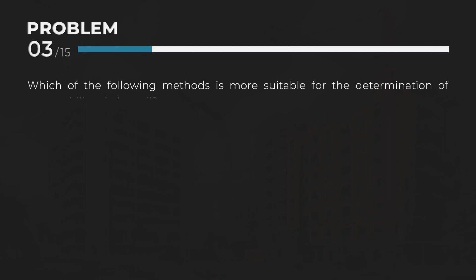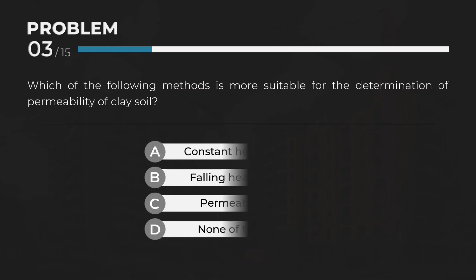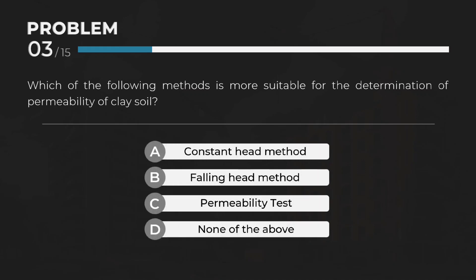Which of the following methods is more suitable for the determination of permeability of clay soil? Answer: B. Falling Head Method.